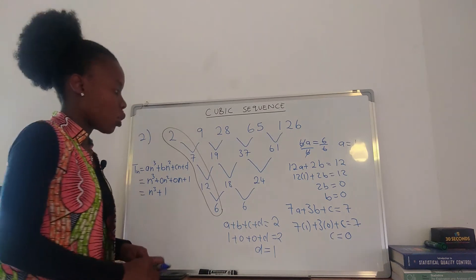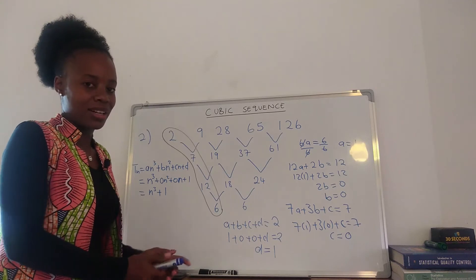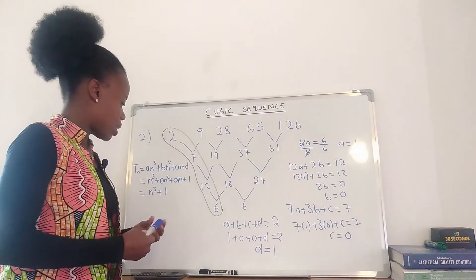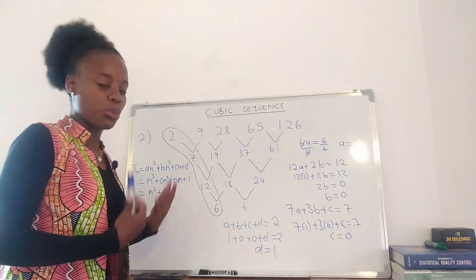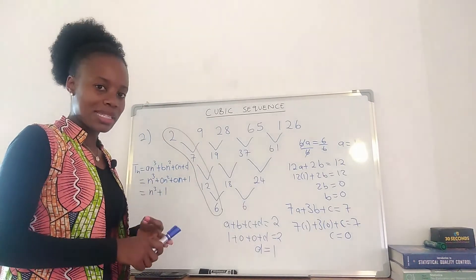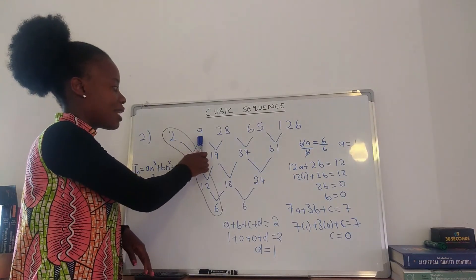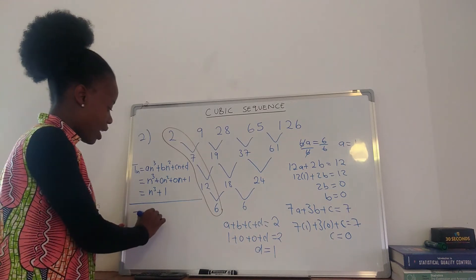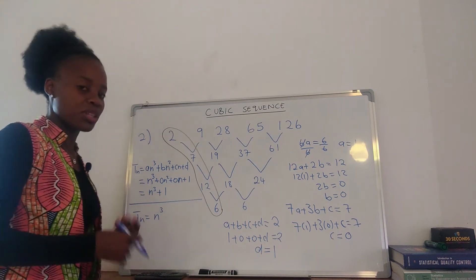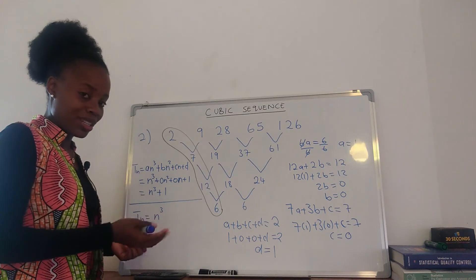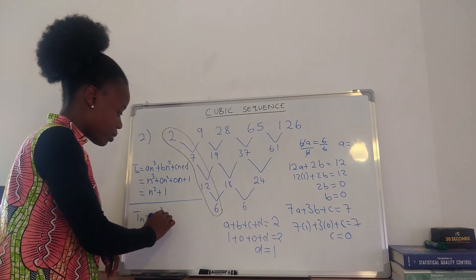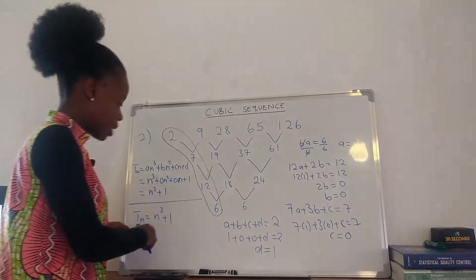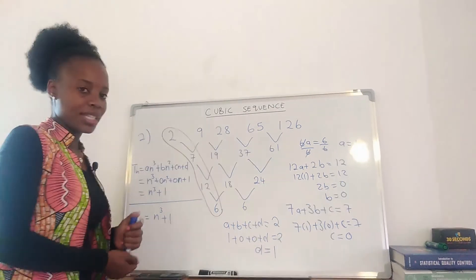For this sequence you can also use trial and error. The standard cubic numbers are 1, 8, 27. Our sequence is 2, 9, 28, so each term is just 1 more than the cube. You can immediately see the answer is n³ + 1 without doing all the steps.